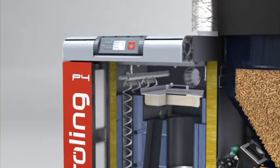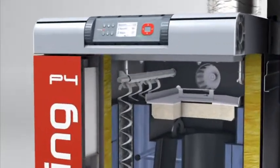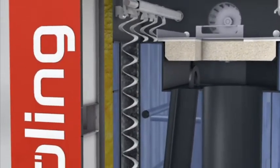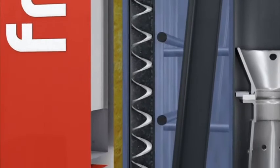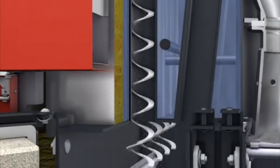With the automatic cleaning mechanism, cleaning becomes effortless. The movement of the integrated spiral springs automatically cleans the heat exchanger, enabling the Frawling P4 to maintain an optimal operating standard.